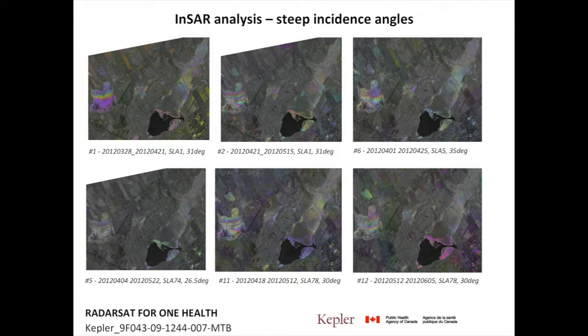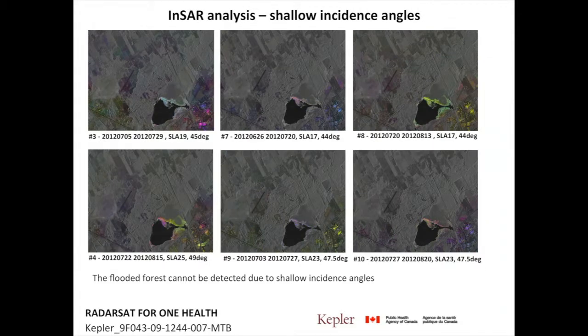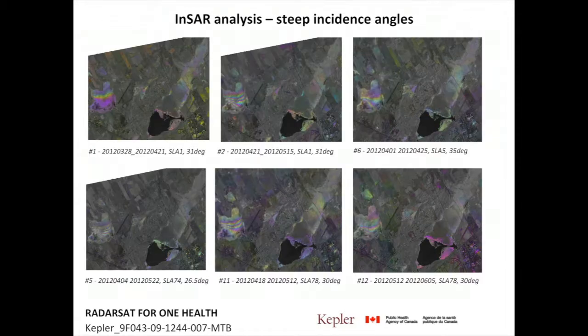This is important because most of the time in hydrology, people assume flat water when calculating the volume of water, and it's not going to be very accurate. With the shallow incidence angle we lose all the information on the marsh and in the flooded forest — we are left only with the sparse vegetation around the wetland and the open surface. With the right incidence angle, our map shows a lot of water — and that is the real answer.